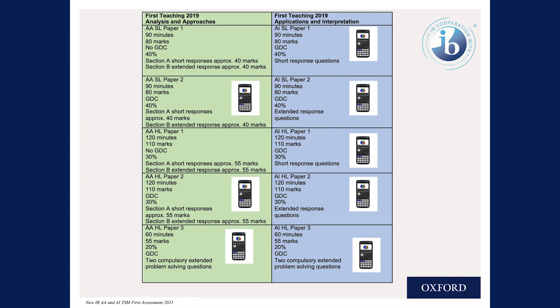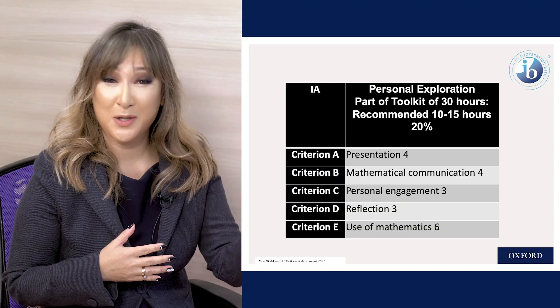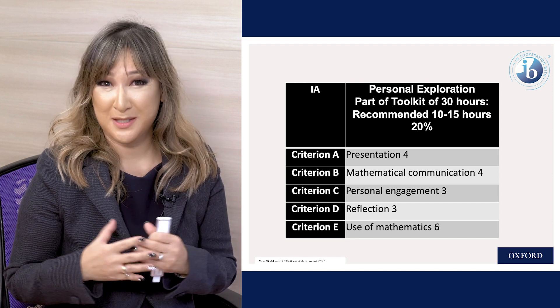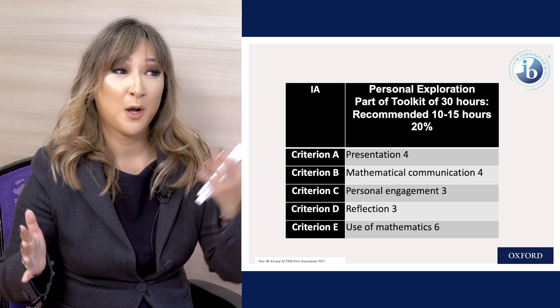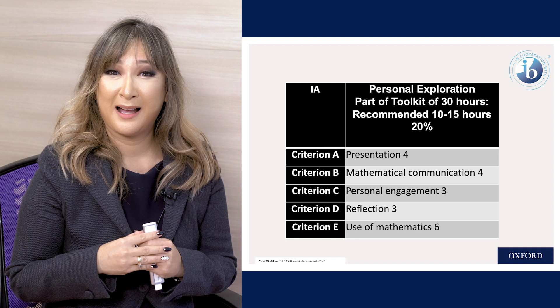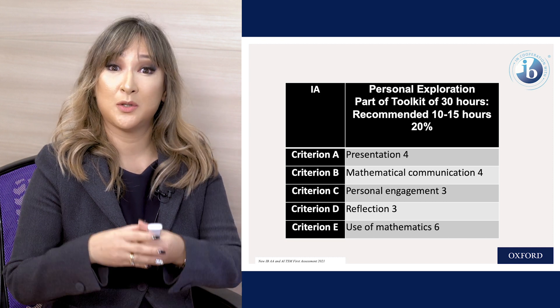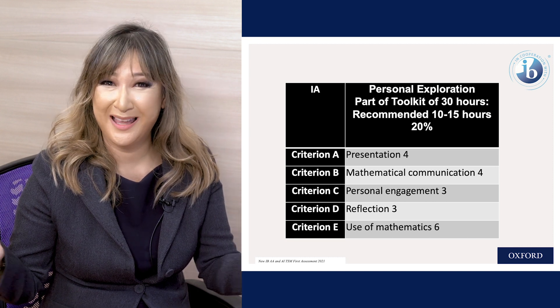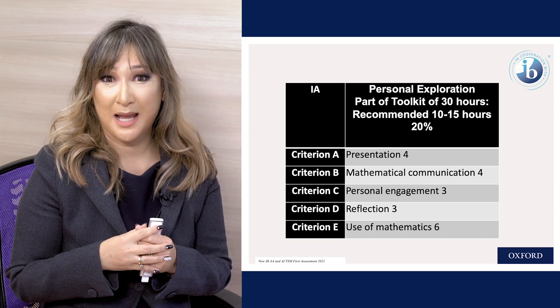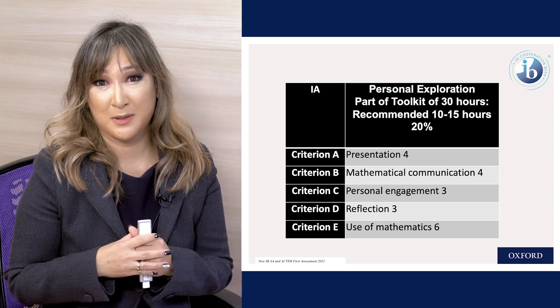Paper three is a 60-minute paper worth 55 marks. It consists of two compulsory extended response questions, both requiring the GDC for both pathways. We must also remember the internal assessment, which is worth 20% of the overall grade. All students in the IB Diploma Mathematics program complete a personal exploration, with 30 hours devoted to the toolkit, and 10 to 15 of those hours recommended for the internal exploration.